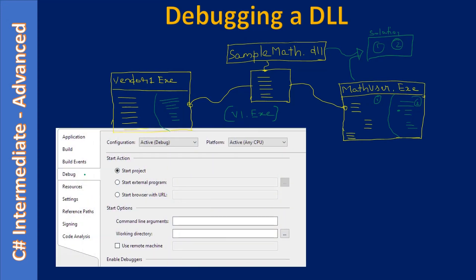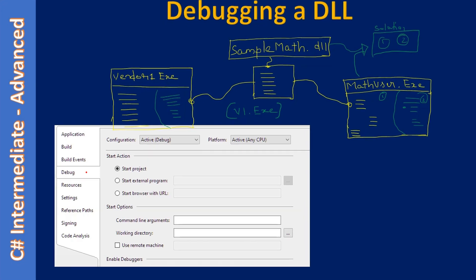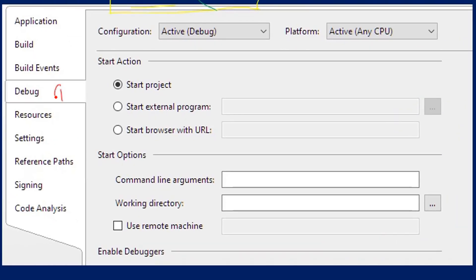Since SampleMath is owned by us and vendor one.exe is developed by some third party, what we have to do - we have to go to the Debug tab. Then in the Debug tab under Start Action, you can see an option for Start External Program.